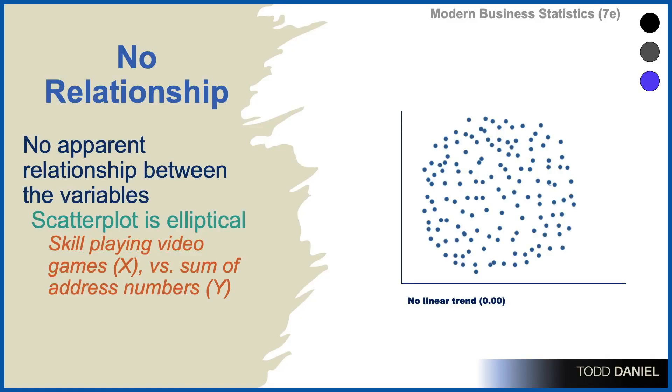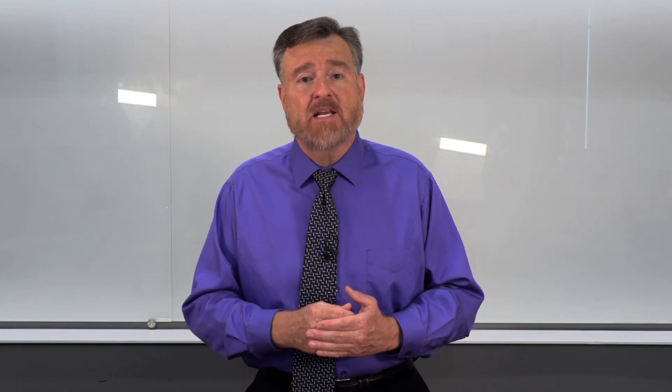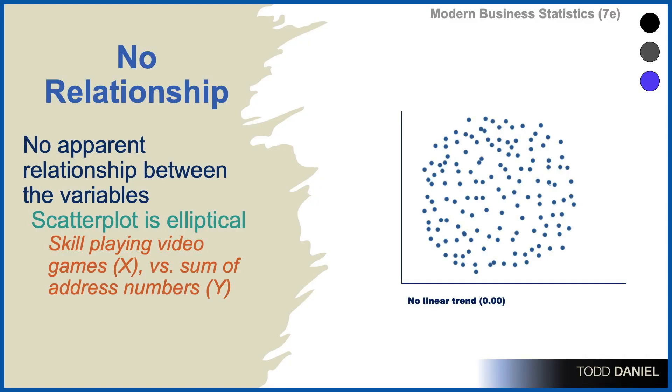In this example, I have created a variable for skill at playing video games and plotted it against the sum of address numbers. For instance, if you live at 1234 Main Street, we add up 1234, your score would be 10. What we can see is that there is no relationship between these two variables.